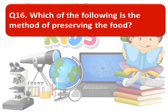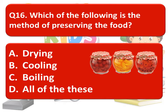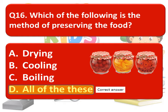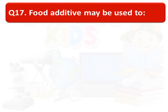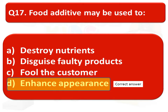Which of the following is a method of preserving food — drying, cooling, boiling, or all of these? The correct answer is all of these are methods of preserving food. Next: food additives may be used to — Option A: destroy nutrients, Option B: disguise faulty products, Option C: fool the customer, Option D: enhance appearance. The correct answer is Option D — enhance appearance.